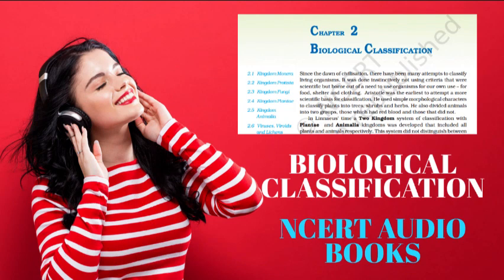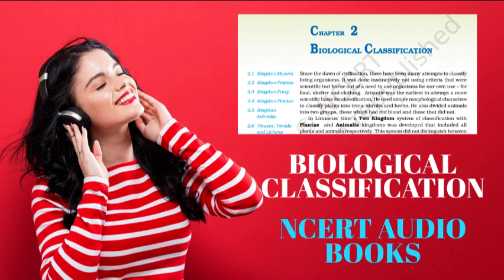Topic 2.2.1 Chrysophytes. This group includes diatoms and golden algae (desmids). They are found in freshwater as well as in marine environments. They are microscopic and float passively in water currents, i.e., planktons. Most of them are photosynthetic. In diatoms, the cell wall forms two thin overlapping shells which fit together as in a soap box. The walls are embedded with silica and thus are indestructible. Diatoms have left behind large amounts of cell wall deposits in their habitat. This accumulation over billions of years is referred to as diatomaceous earth. Being gritty, this soil is used in polishing and filtration of oils and syrups. Diatoms are the chief producers in the oceans.